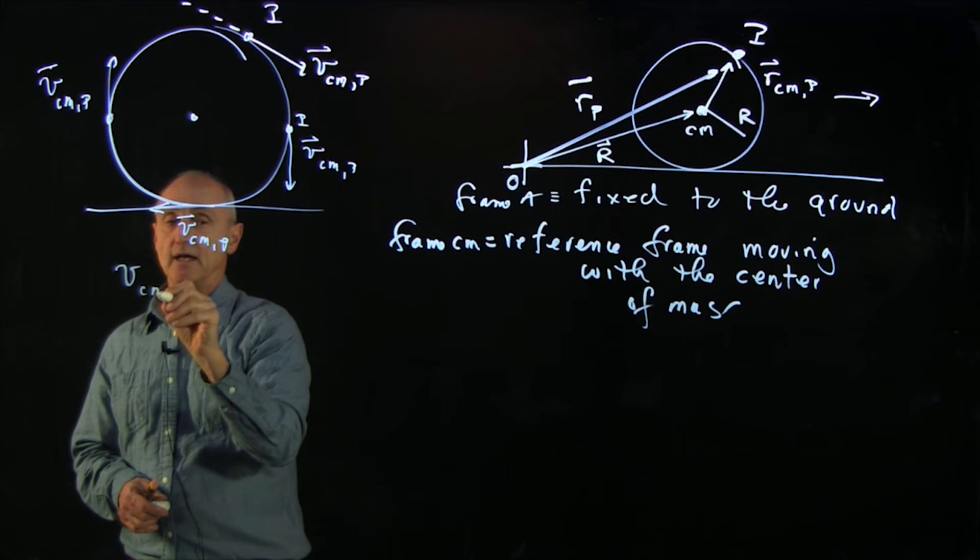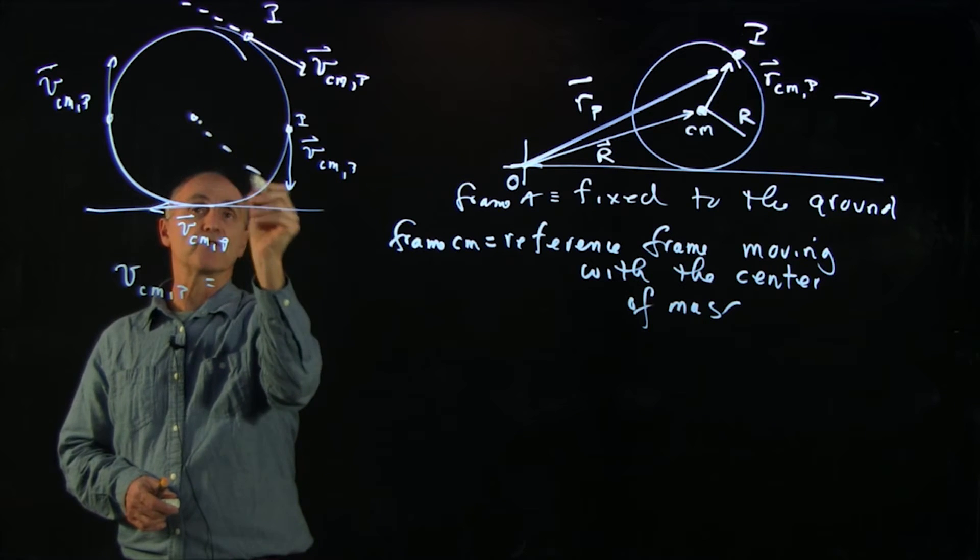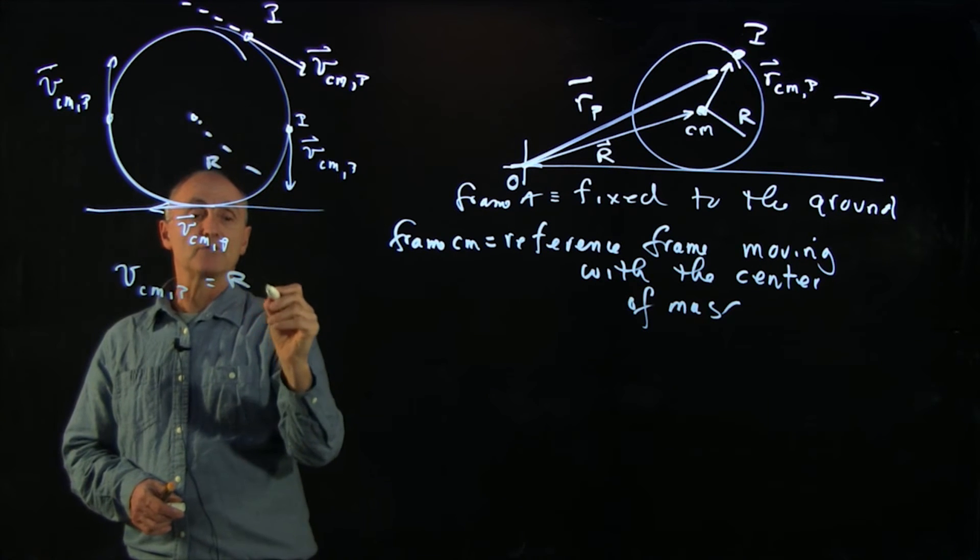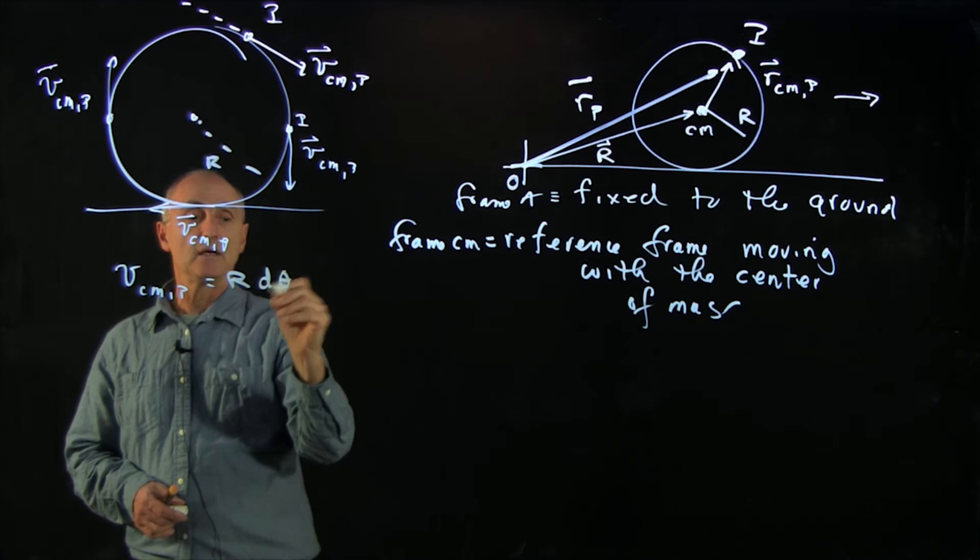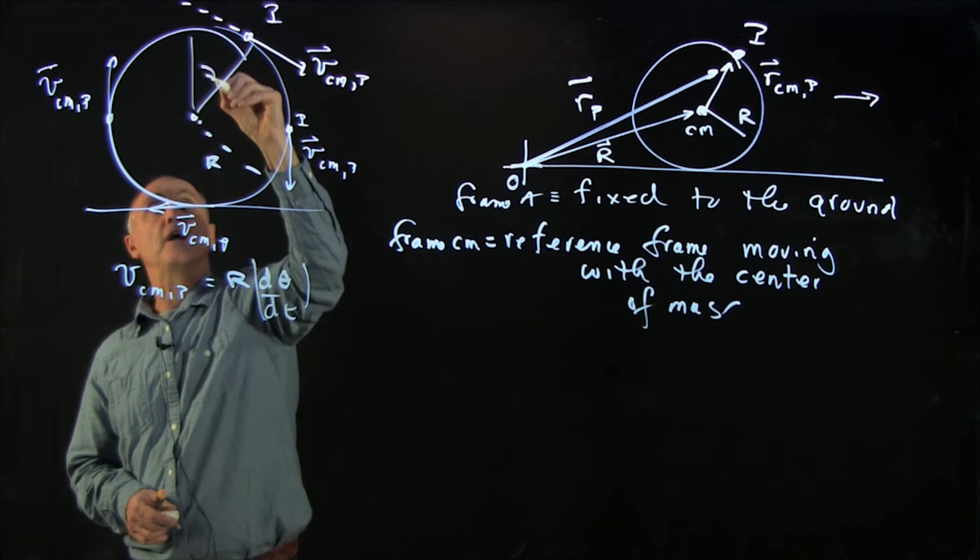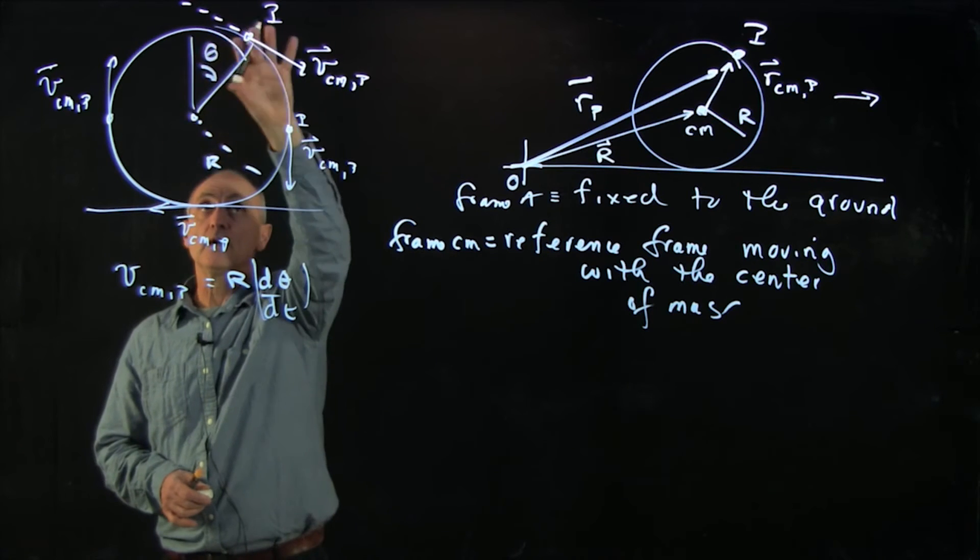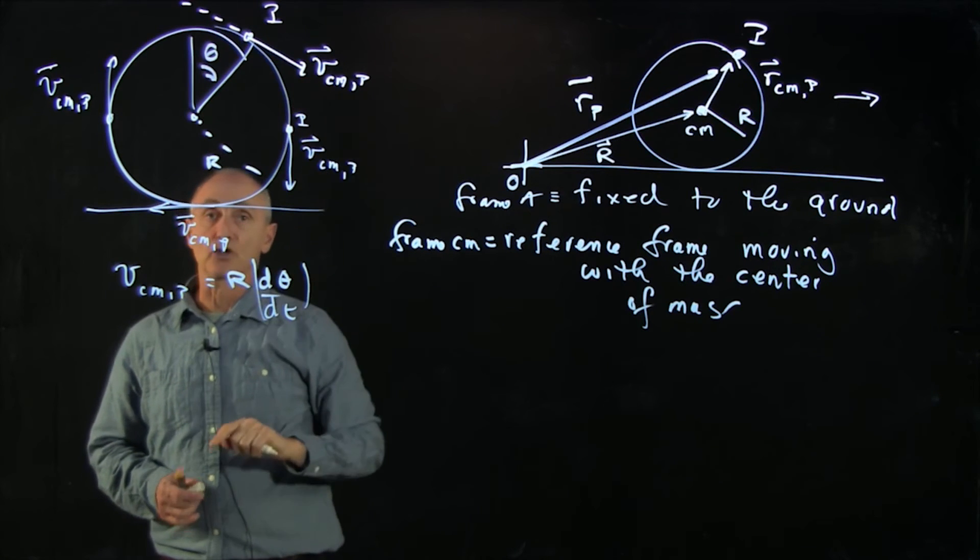And we know that the speed in that reference frame is given by the radius of the wheel times the rate dθ/dt. And here, let's define the variable theta this way. And so in this frame, what's happening is pure circular motion.